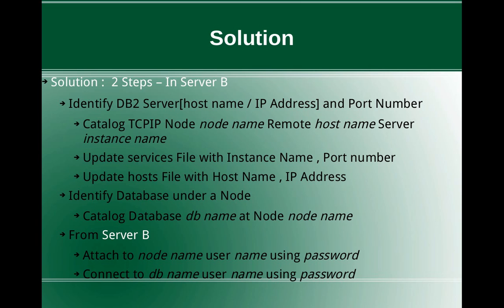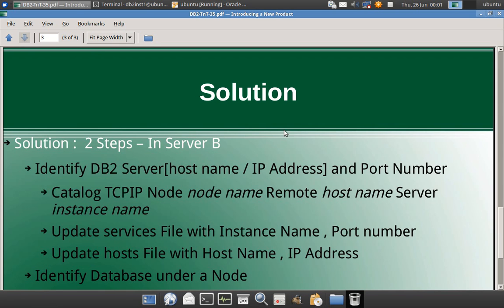After cataloging the TCP/IP node, you have to update the services file which contains the mapping of the instance name to the port number. Similarly you have to update the hosts file with the hostname and IP address. The second step is to identify the database under a node using the command: catalog database [DB_name] at node [node_name]. Once the catalog is done from Server B, you can use the command 'attach to [node_name] user [username] using [password]' to attach to an instance, or 'connect to [DB_name] user [username] using [password]' to connect to a database.